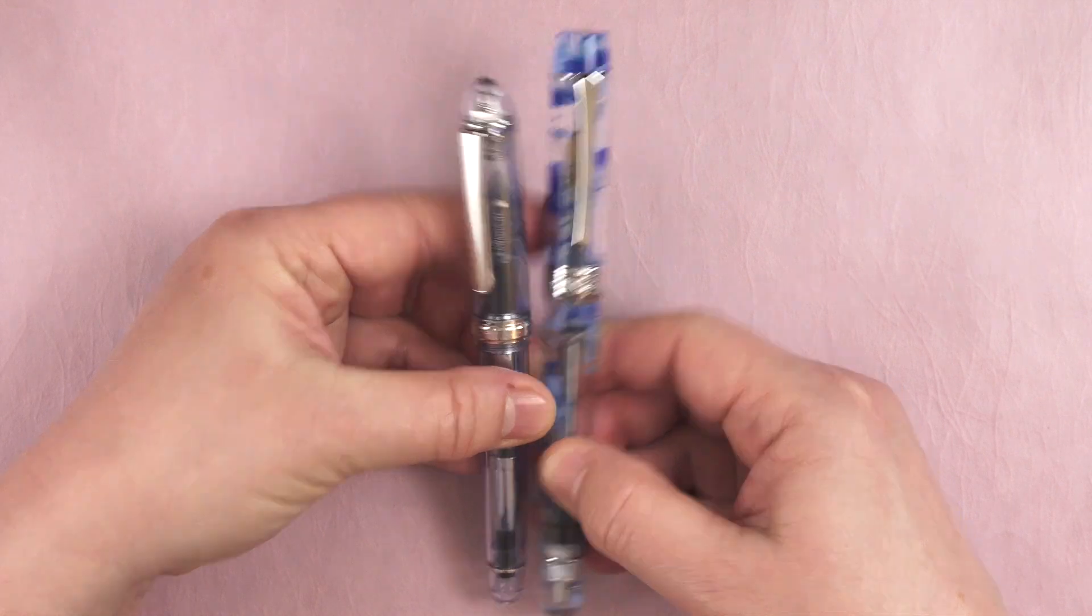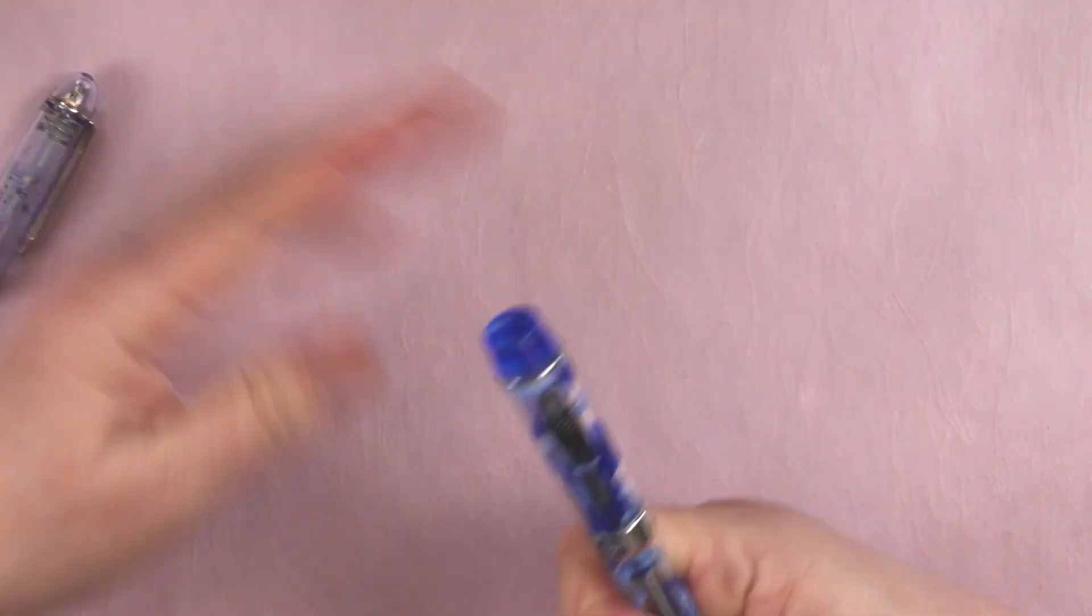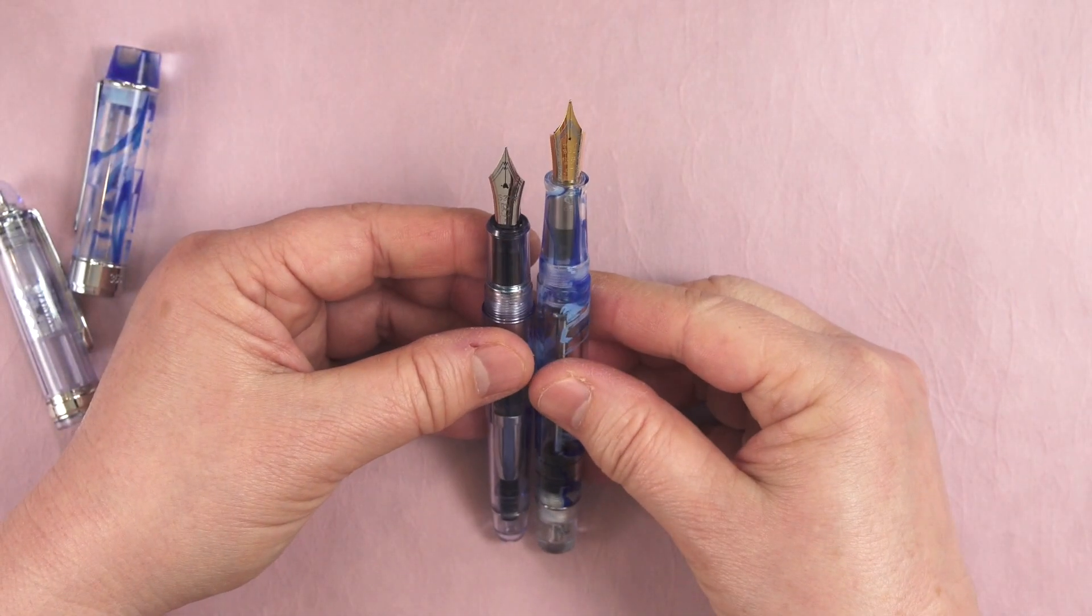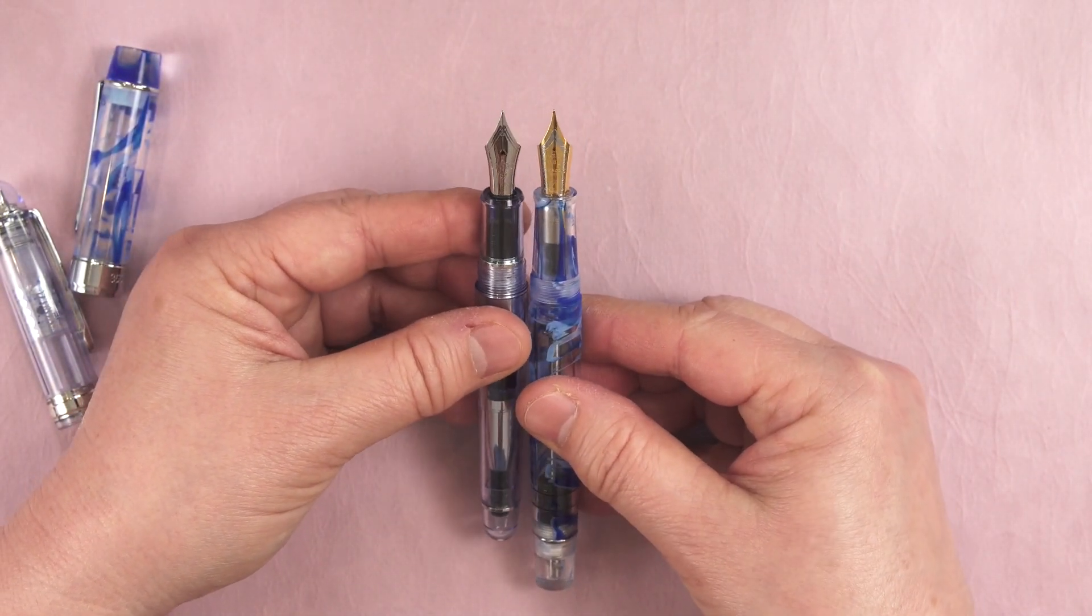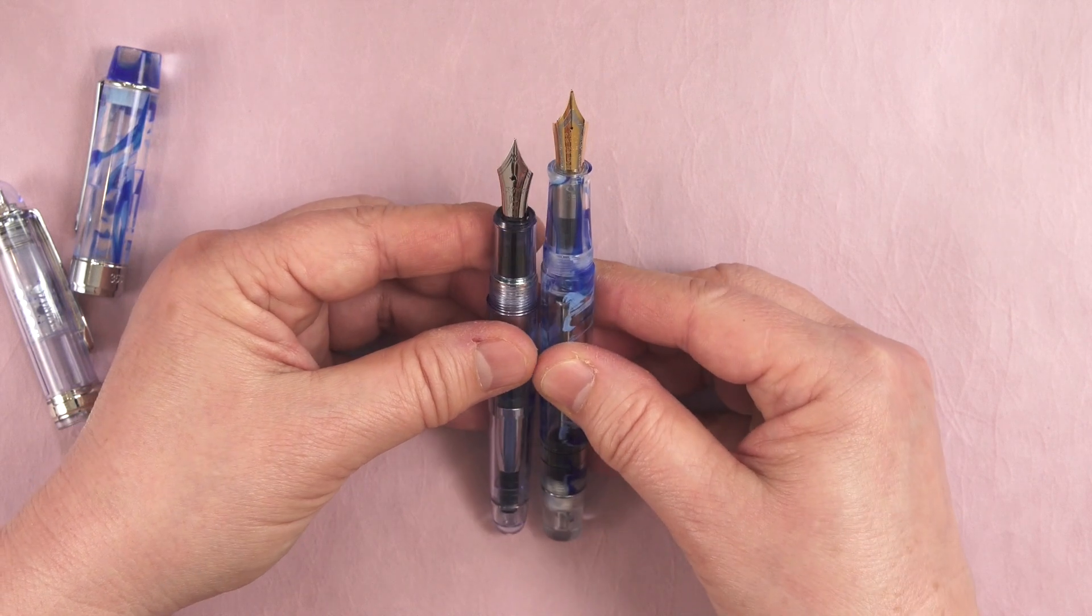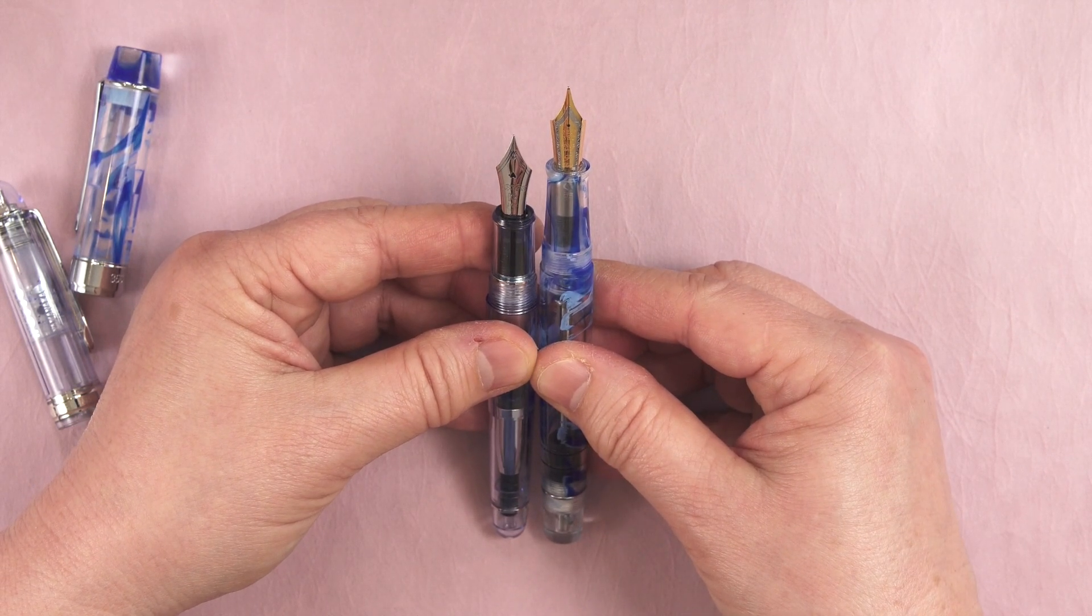Here it is compared to a Platinum 3776 and it's significantly longer, especially when uncapped. It's due mainly because of the blind cap on the 355.